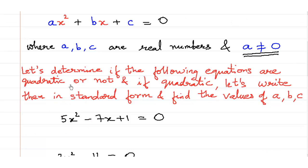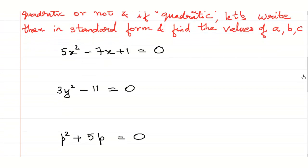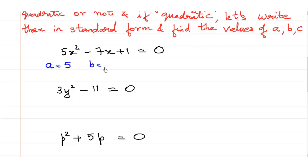Let us determine if the following equations are quadratic or not, and if quadratic, let us write them in the standard form and find the values of a, b and c. The first one is 5x² minus 7x plus 1 is equal to 0. As we can see, there is only one variable which is x, and the coefficient of x² is 5 which is not 0. So this is a quadratic equation and it is already in standard form. The value of a is 5, the value of b is minus 7, and the value of c is 1.